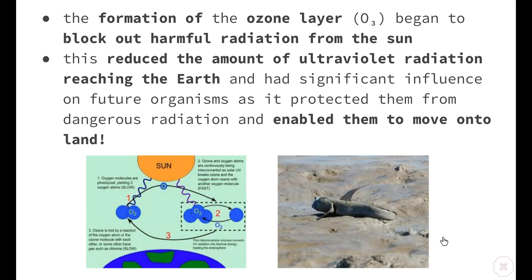We've looked at a couple of different reasons why the change from anoxic to oxic is significant. The increase in oxygen meant that organisms could become more complex, and the formation of the ozone layer helped move organisms from the water onto the land. That brings us to the end of this video — thank you for watching.